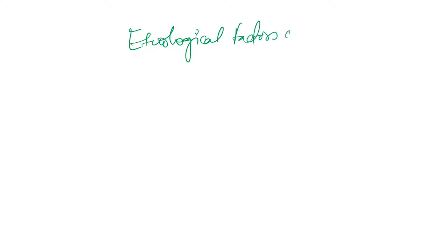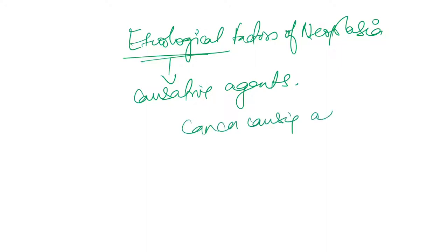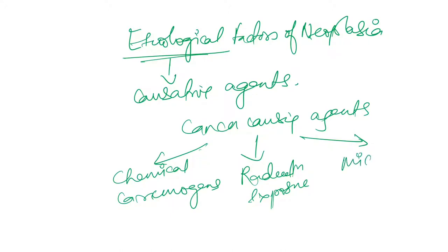In this video we will be talking about etiological factors of neoplasia — the causative agents of neoplasia. Cancer-causing agents are basically divided into three parts: number one is chemical carcinogens, then cancer due to radiation exposure, and number three due to microbial agents.